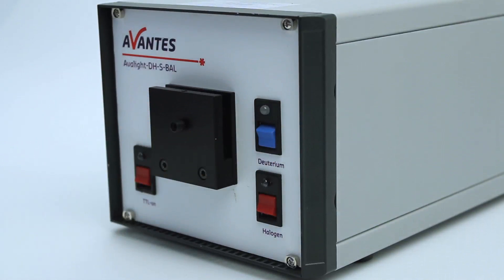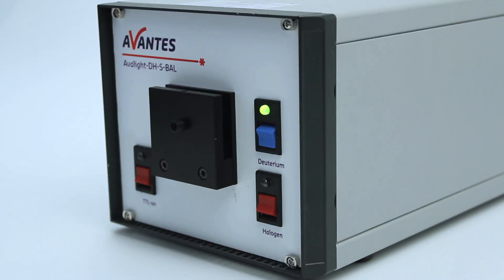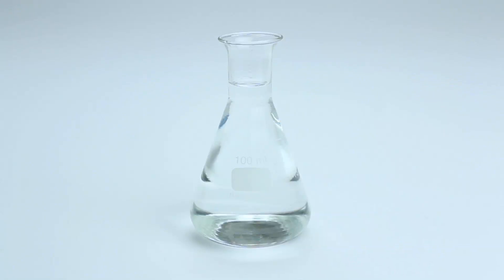Be aware that the Avantis deuterium halogen light source needs to be warmed up for 15 minutes to have a stable output of the lamp. In this example, we are measuring ethanol.